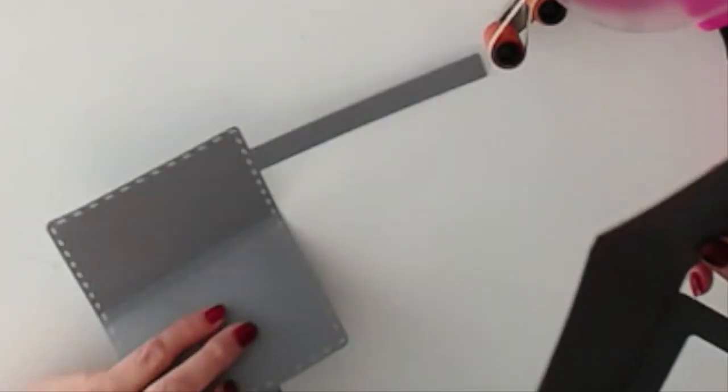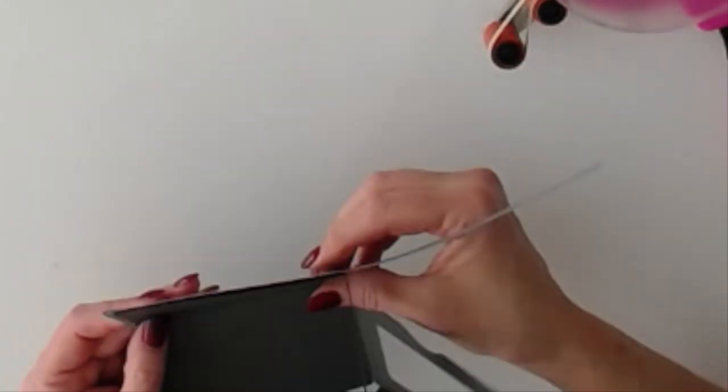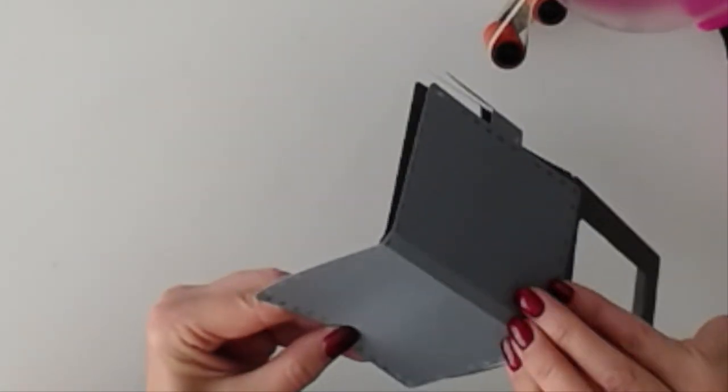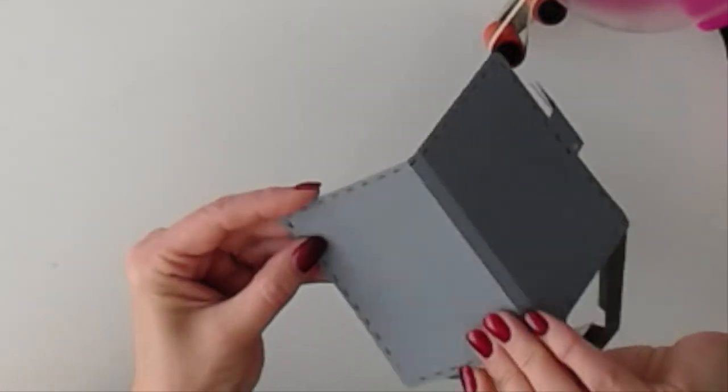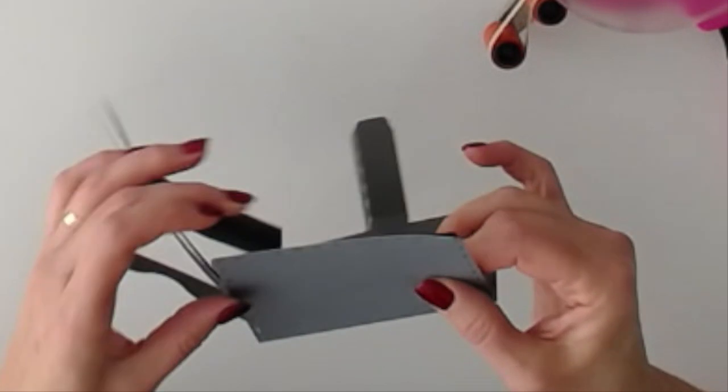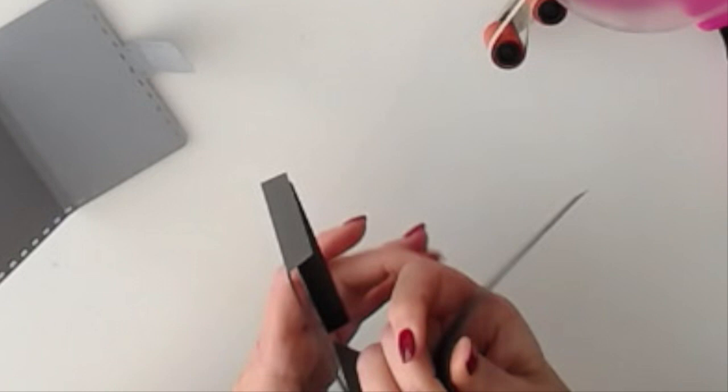So we'll start assembling. This will go on the inside. And you want to make sure you center it up so that the inside color shows through the holes on the outside. It looks like stitching that way. It's very cute. Okay.